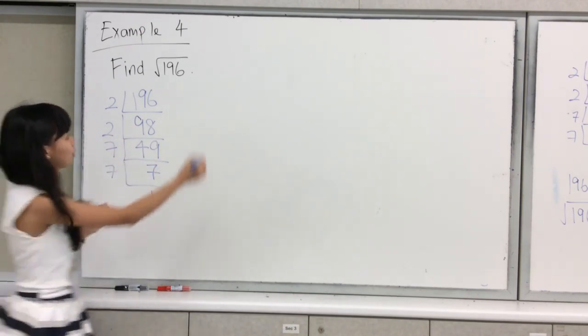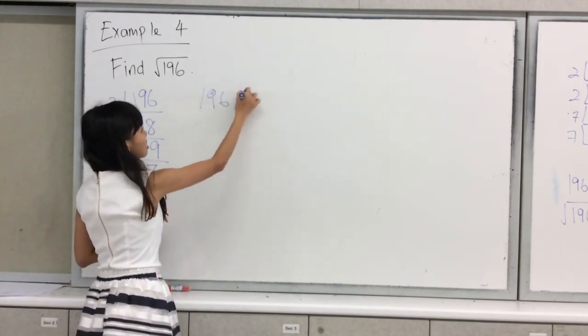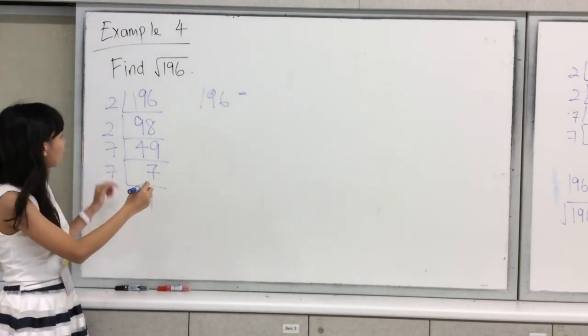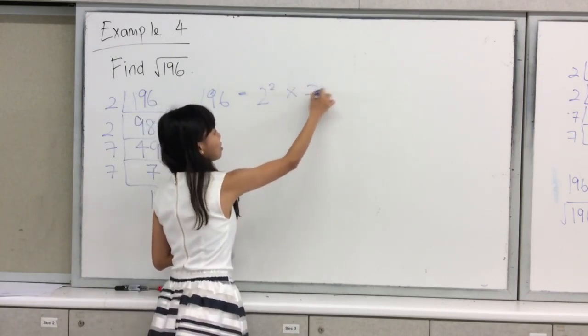And you end off with it, so you will know that 196 written in index form will be 2 squared times 7 squared.